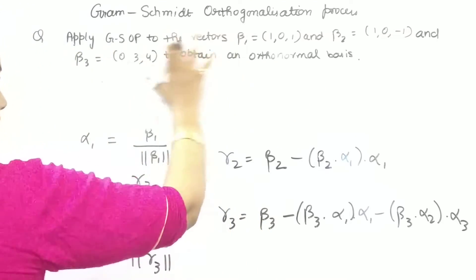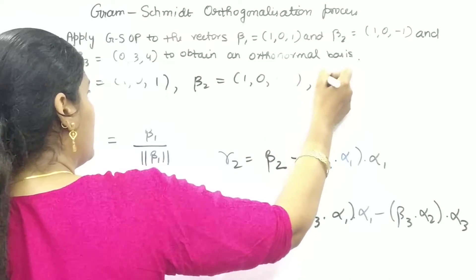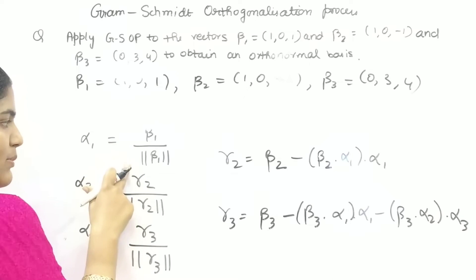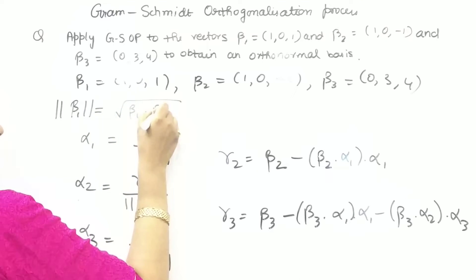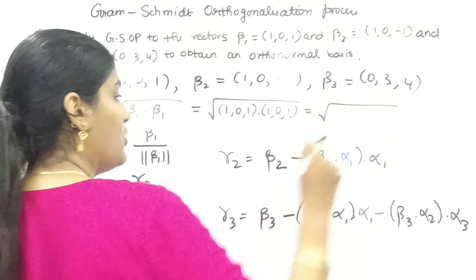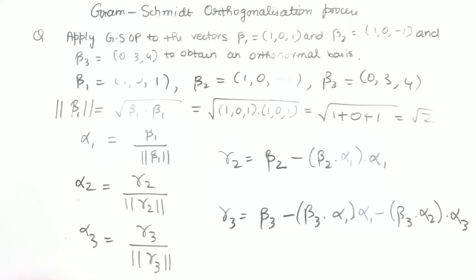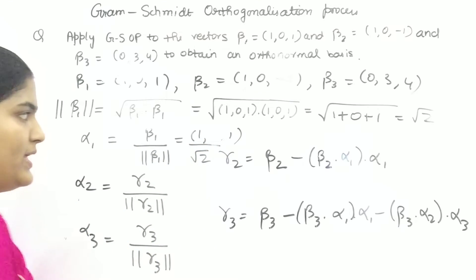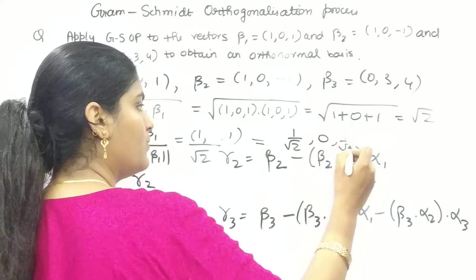Now let's begin with the example. Your vectors are beta 1 = [1, 0, 1], beta 2 = [1, 0, -1], and beta 3 = [0, 3, 4]. For the first orthonormal base, alpha 1 = beta 1 divided by the norm of beta 1. The norm is the square root of the inner product of beta 1 with itself: [1, 0, 1] · [1, 0, 1] = 1 + 0 + 1 = 2, so the norm is root 2. Therefore, alpha 1 = [1/√2, 0, 1/√2].